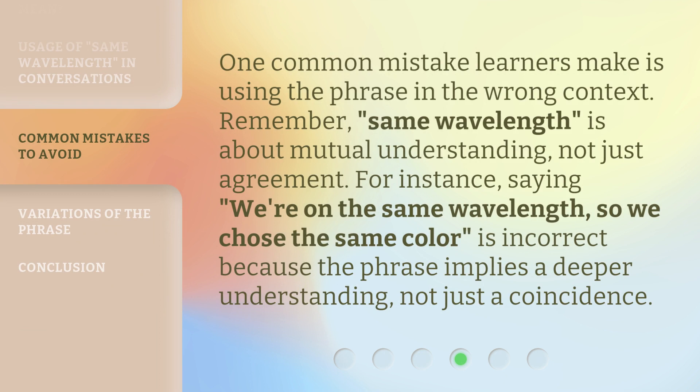One common mistake learners make is using the phrase in the wrong context. Remember, Same Wavelength is about mutual understanding, not just agreement. For instance, saying "we're on the Same Wavelength, so we chose the same color" is incorrect because the phrase implies a deeper understanding, not just a coincidence.